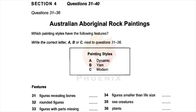Among these are what we call the dynamic, yam, and modern styles of painting. One of the most significant characteristics of the different styles is the way that humans are depicted. The more recent paintings show people in static poses, but the first human images to dominate rock art paintings over 8,000 years ago were full of movement. These paintings showed people hunting and cooking food, and so they were given the name 'dynamic' to reflect this energy.